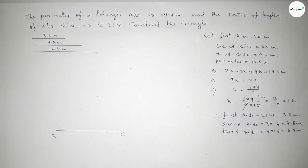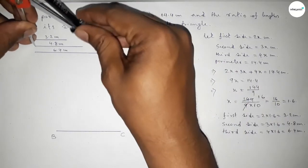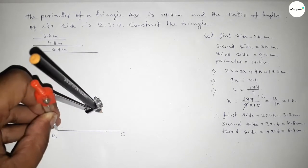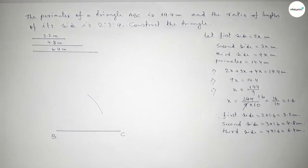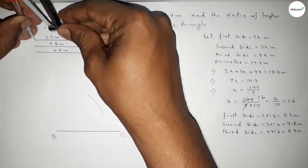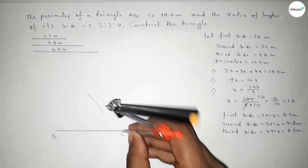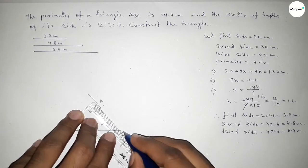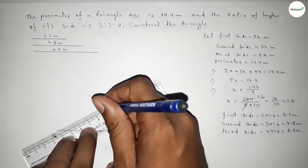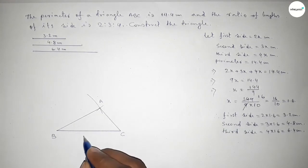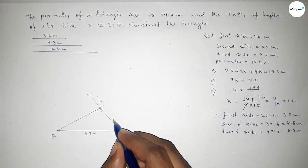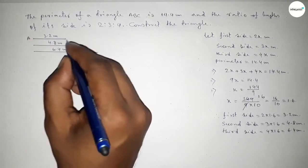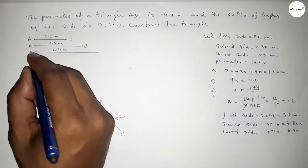Now taking the length 4.8 cm using the compass, placing the compass on point B and drawing an arc. Next, taking the length 3.2 centimeters using the compass, placing it on point C and drawing another arc to cut the first one. Both arcs intersect at a point — marking this as point A. Joining A to C and then A to B. This side is 6.4 cm (BC), this side is 3.2 cm (AC), and this side is 4.8 cm (AB).